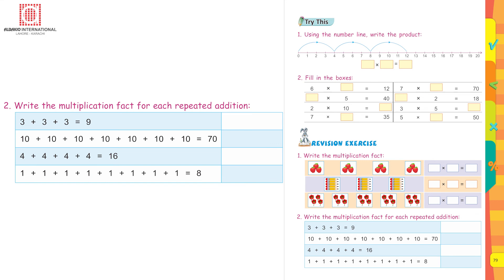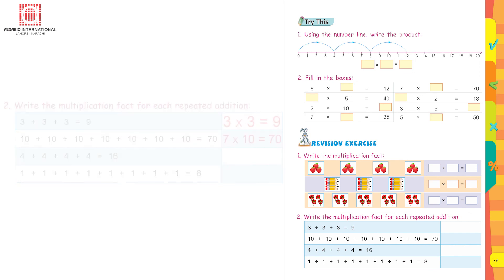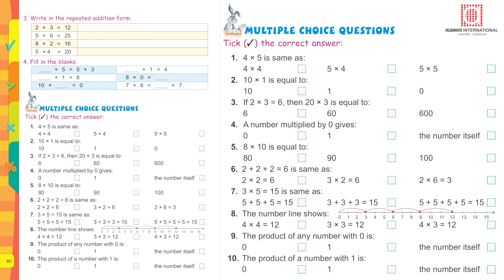Write the multiplication fact for each repeated addition. Three plus three plus three equals 9, which means 3 multiplied by 3 equals 9. Then ten added seven times: there are seven tens, so 7 into 10 equals 70. This is how you do the rest of the questions. The last section is multiple choice — you can do it yourself since you have done so many sums.